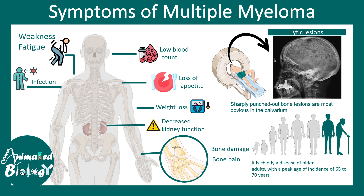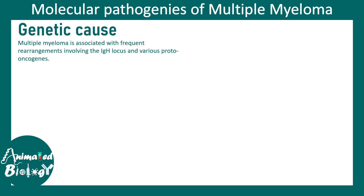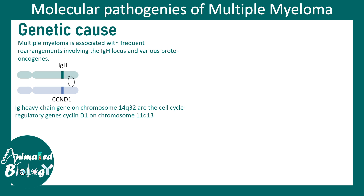Multiple myeloma is generally found in older people, typically in the age group of 65 to 70, but it can also occur earlier depending on genetic factors. There is a strong genetic component associated with multiple myeloma. Chromosomal translocation has been found to be associated — IGH, located on chromosome 14, can exchange strands with chromosome 11, where the cyclin D1 gene resides. Cyclin D1 is associated with cell division.